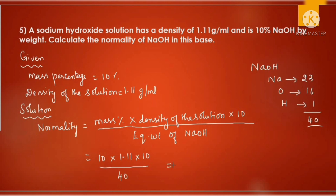Substituting: Normality = 10 × 1.11 × 10 / 40 = 2.77 N. I hope you understood all the problems. With this I am signing off today. We shall meet in the next session with different sets of questions and solutions. Thanks for watching.